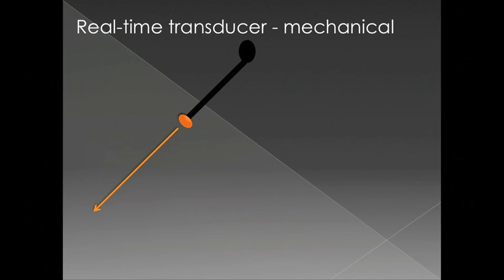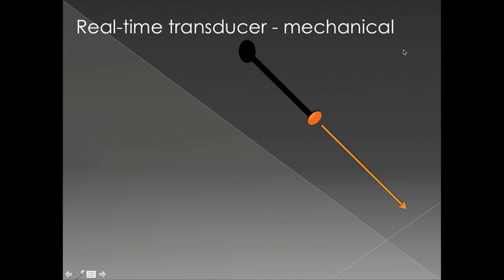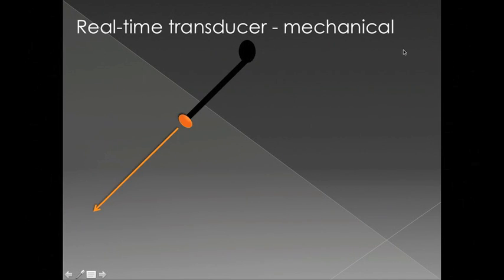The next invention along the chain was a real-time transducer, meaning the image was actually generated at the same time as the transducer is scanning. It had a mechanical arm — you can see here the black portion — with a single transducer element on the end, and that transducer and mechanical arm would rotate and scan back and forth so that you could see the image, creating the different beam lines required to make the image.